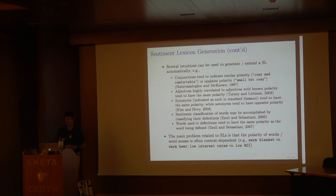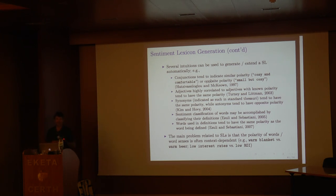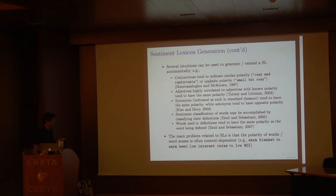How do we generate these lexicons automatically from data? Several linguistic intuitions can be leveraged. The very first one used is that conjunctions tend to link adjectives of the same polarity — 'cozy and comfortable' indicates same polarity — while 'but' tends to link adjectives of opposite polarity. Another intuition from a seminal 2003 paper by Turney and Littman is that adjectives highly correlated with known-polarity adjectives tend to share that polarity.